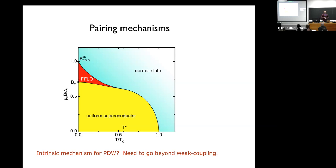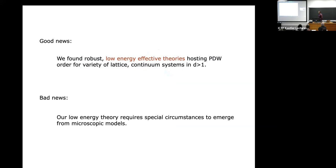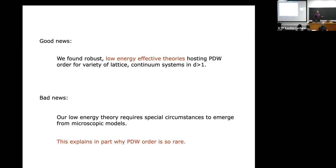Because the susceptibility is not logarithmically divergent at finite q, we need to get away from zero and away from the tyranny of weak coupling. In my talk I have good news: we have found robust low-energy effective theories hosting pair density wave order for a variety of lattice and continuum systems in d greater than one. The bad news is the low-energy theory requires special circumstances to emerge from microscopic models like the Hubbard model. But as an optimistic person, I convert the bad news into good news — the fact that it requires special circumstances explains in part why these states are not found everywhere; it is a rare phase of matter.